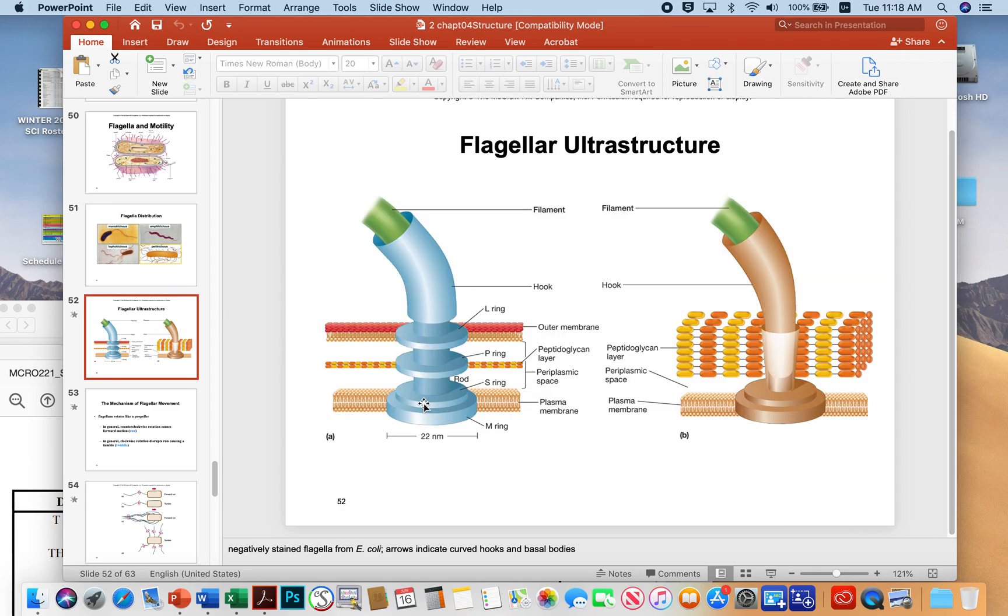The flagella ultrastructure is fairly sophisticated. It's a really neat model for understanding how nanomachines work. In this particular case, you've got a gram-positive and a gram-negative. The gram-negative you can tell because it has an outer membrane, peptidoglycan layer, the big periplasm, and then a plasma membrane.